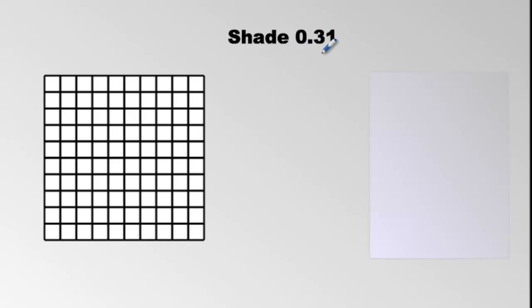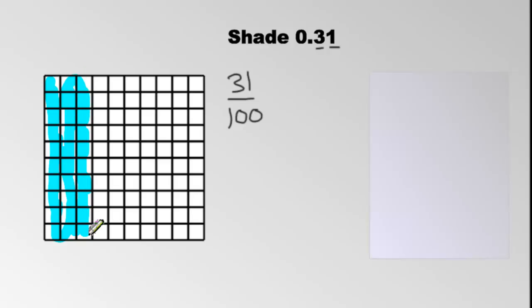How about 0.31? Well, 0.31 is pronounced as 31 hundredths because of the place values, so we can write it as 31 over 100. We have 100 tiles, so let's go ahead and shade 31 of them: 10, 20, 30, and then one more. That's 31 out of 100. Can you convert this into a percentage? Yes — anything out of 100 is the percentage, so this is 31%.